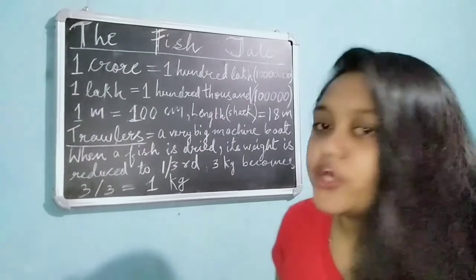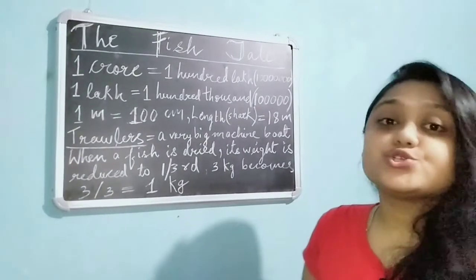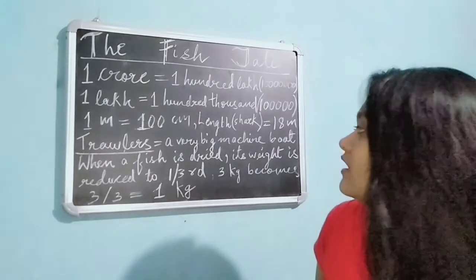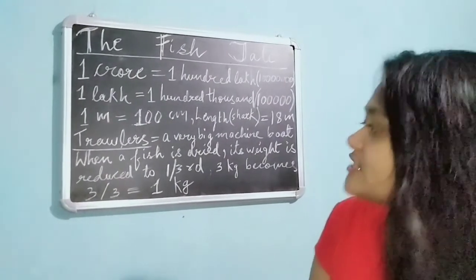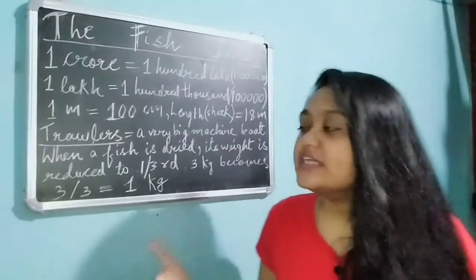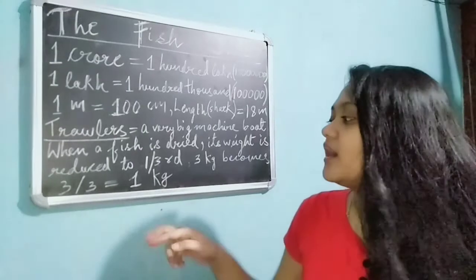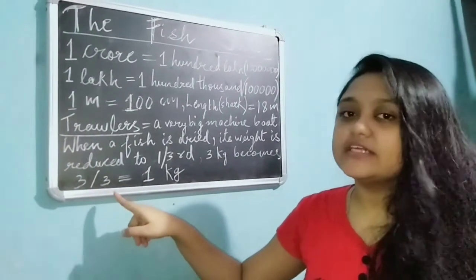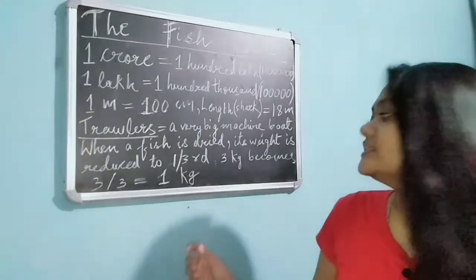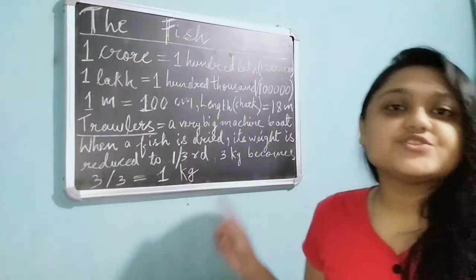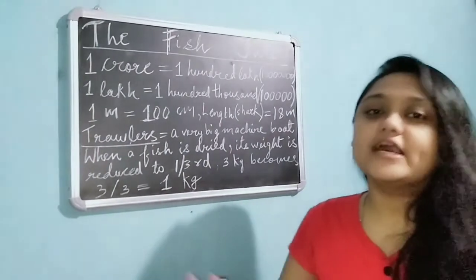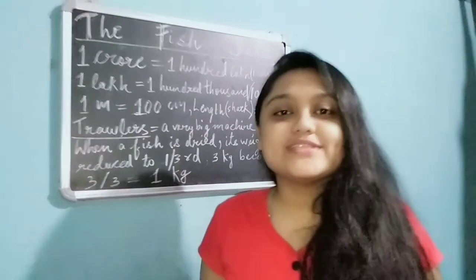Trawlers are a very big machine boat. Next important fact: when a fish is dried, its weight is reduced to one-third. So if the fish weighs 3 kg, it will become one kg — because 3 divided by 3 equals 1. So when the fish is dried its weight is reduced to one-third.